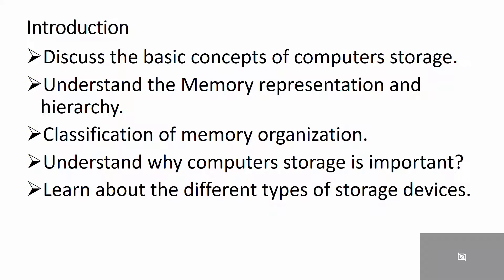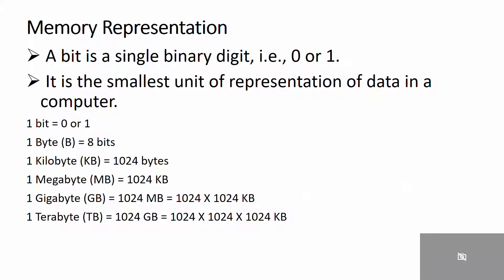Now moving to the next slide: memory representation. The computer memory stores different kinds of data like input data, output data, intermediate results, and instructions. A binary digit or bit is a basic unit of memory. A bit is a single binary digit, that is 0 or 1. A bit is the smallest unit of representation of data in a computer.